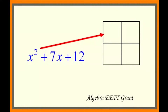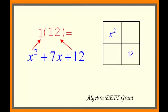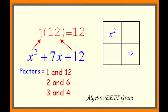In the Punnett square, the top left is always your squared term — in this case x squared — and the bottom right is always the constant, which is 12. In the other two squares, we break up 7x. Take the coefficient of x squared, which is 1, and the constant, which is 12, and multiply them: 1 times 12 equals 12. The factors of 12 are 1 and 12, 2 and 6, and 3 and 4.